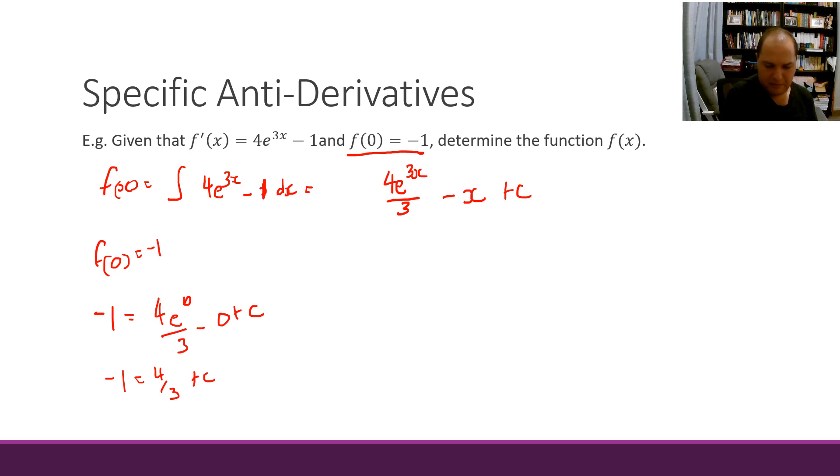Negative 1 equals 4 thirds plus c. So rearranging that, c equals negative 7 on 3. Therefore, my original function F of x is 4e to the 3x over 3 minus x minus 7 thirds.